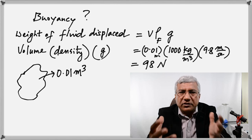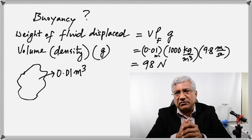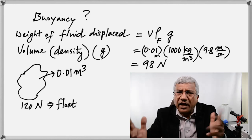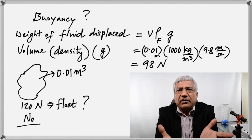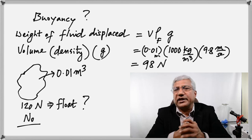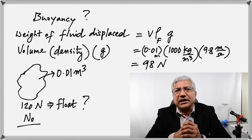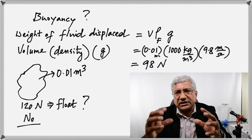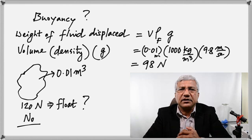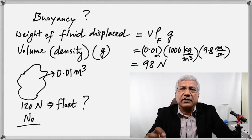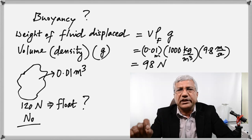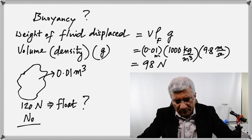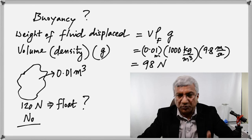That's the buoyant force on this object. Assuming the object had a weight of 120 newtons — will it float? No, because the weight of the object is more than the buoyant force; it cannot float. Whenever an object floats, it is displacing its own weight. If any object floats, the weight of the object equals the weight of fluid that it displaces. The answer here is no — its weight is 120 newtons, which exceeds the 98-newton buoyant force.